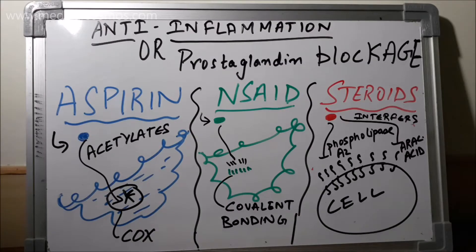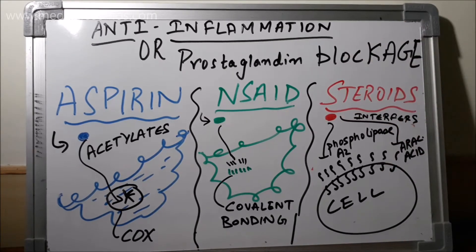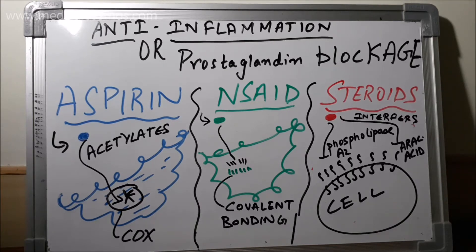The three anti-inflammatory drugs — aspirin, NSAIDs, and steroids — ultimately block prostaglandin formation. Prostaglandins are responsible for the rise in fever and other local activities in the tissue or in a systemic manner.